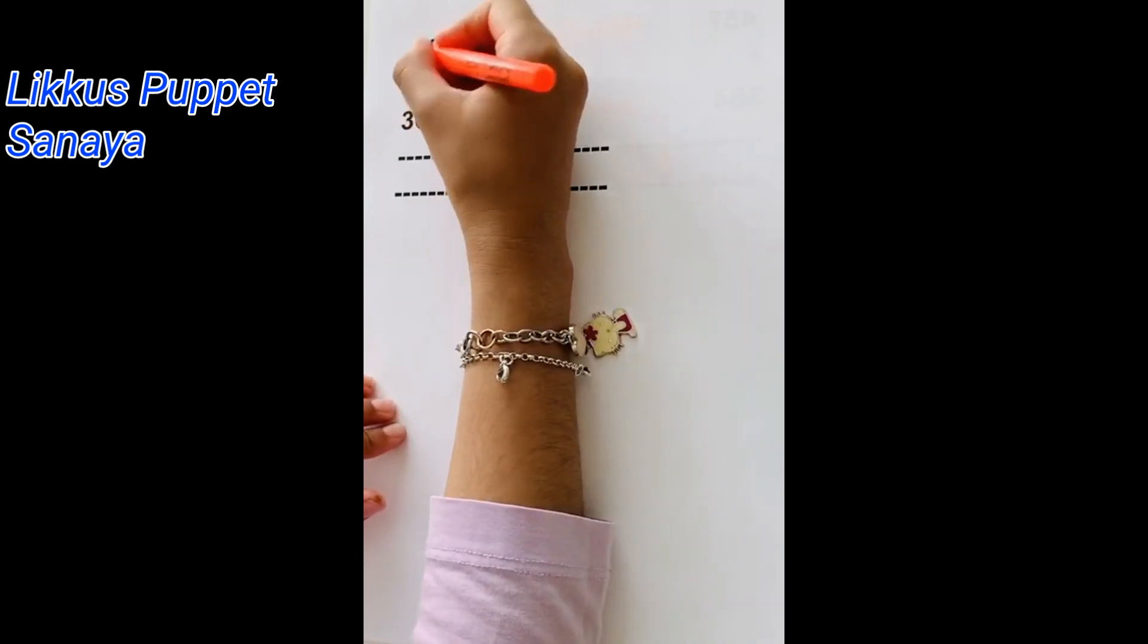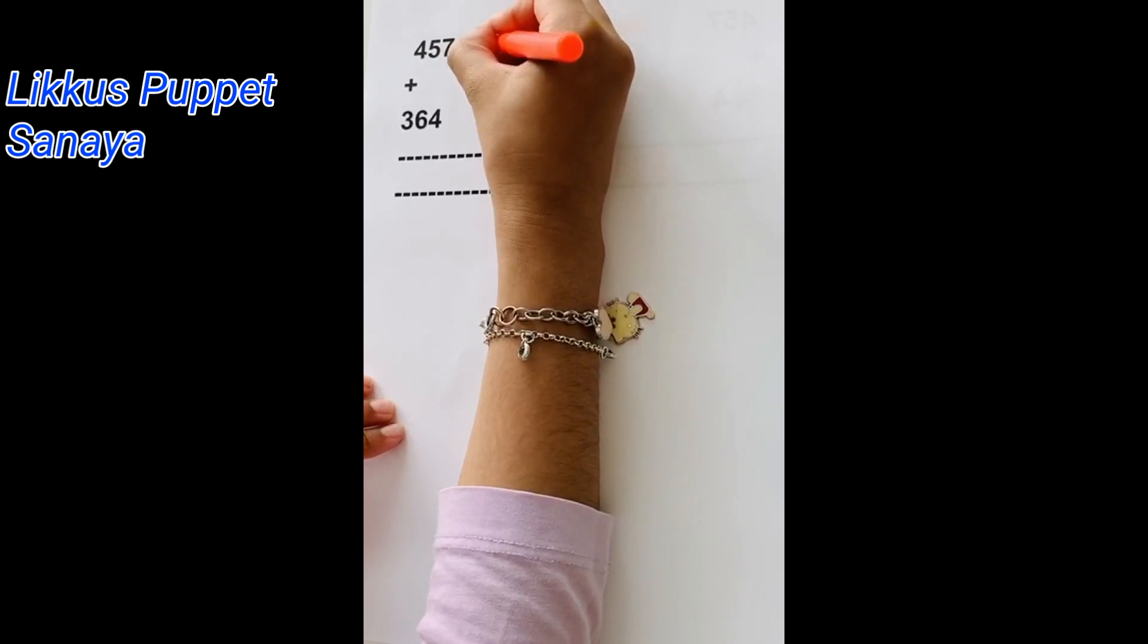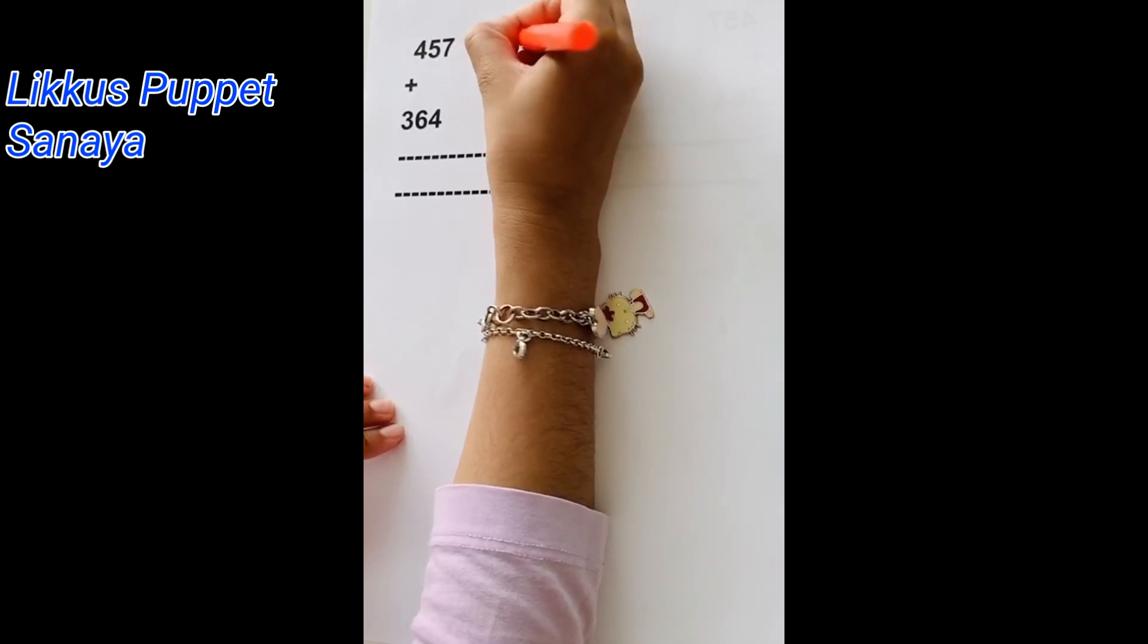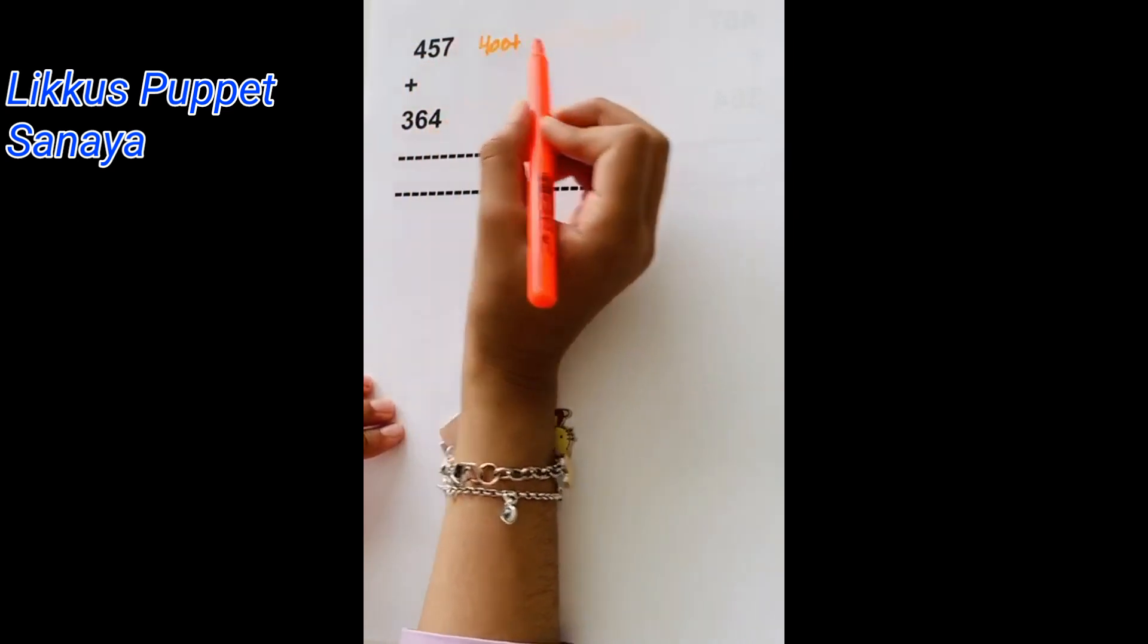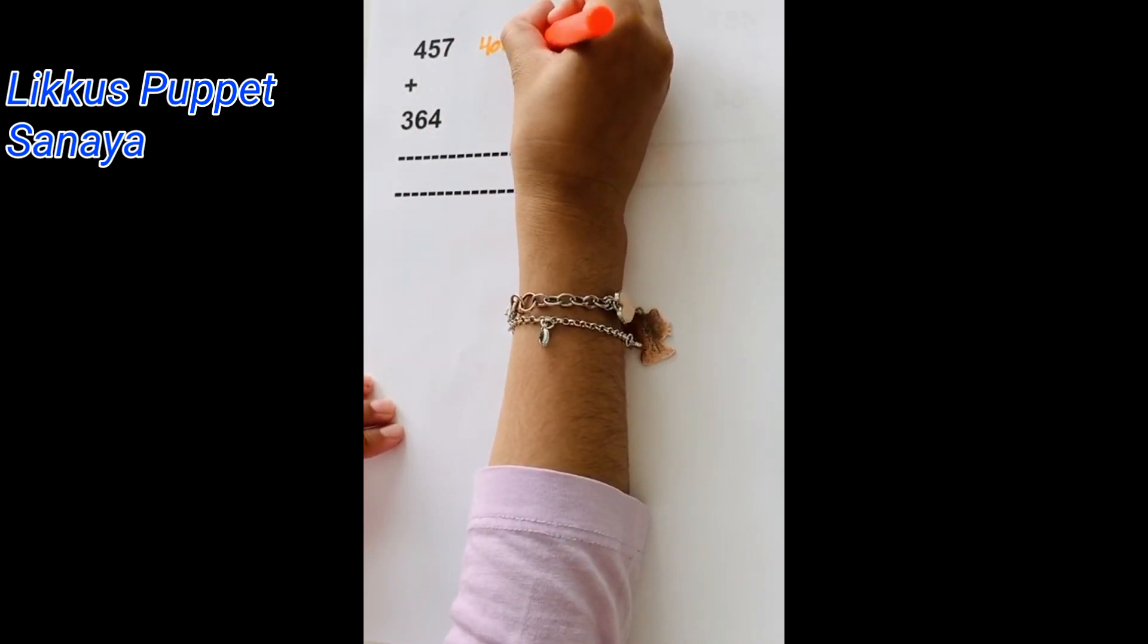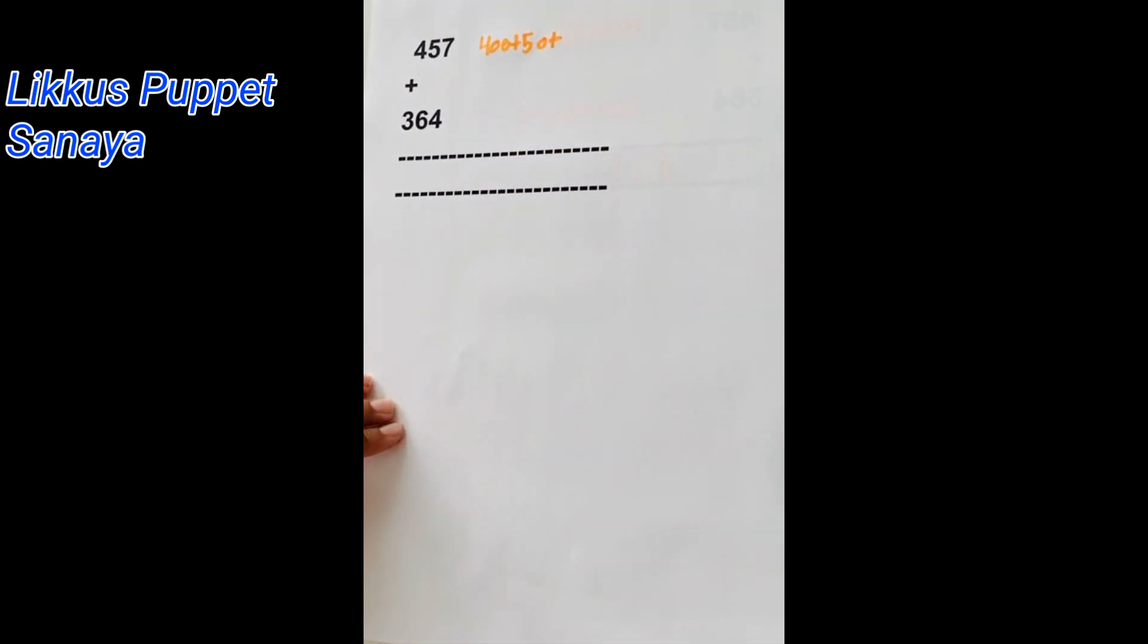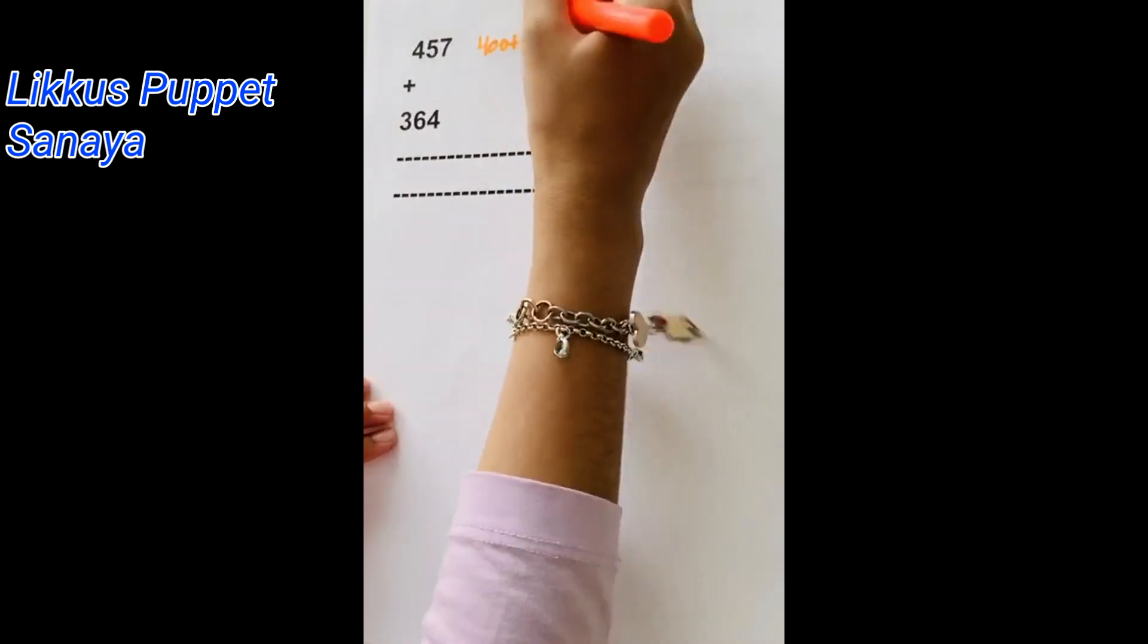So 4 is in the 100's place. So 400 plus 5 is in the 10's place. So 50 plus 7 is in the 1's place. So it's just 7. There we go.